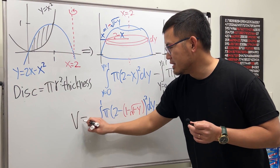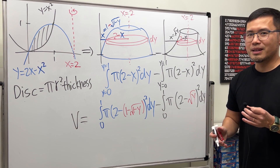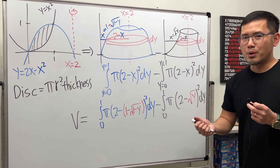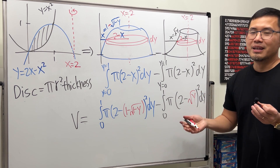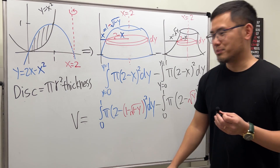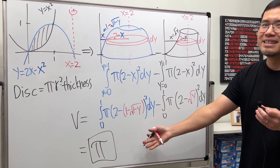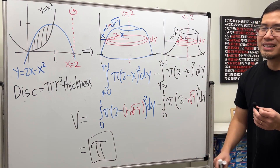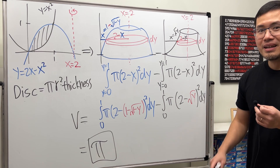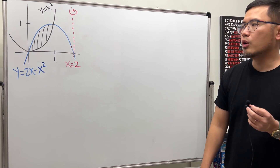Together, those two integrals give us the total volume. Usually I ask students to set up the integrals and use a calculator to find the answer. Amazingly, the answer is just equal to π. Check it on Wolfram Alpha — pretty cool!